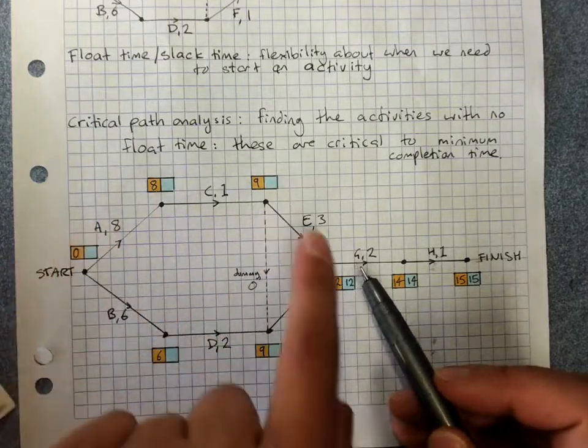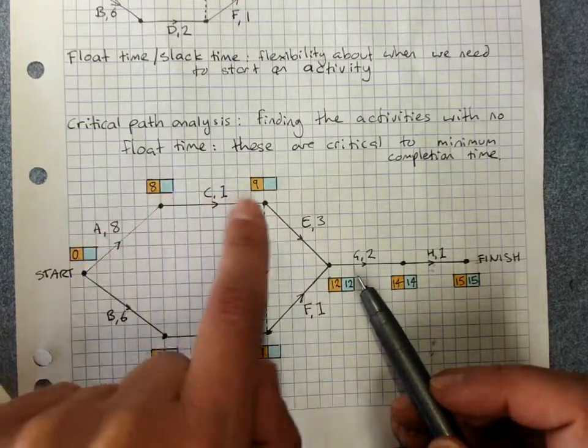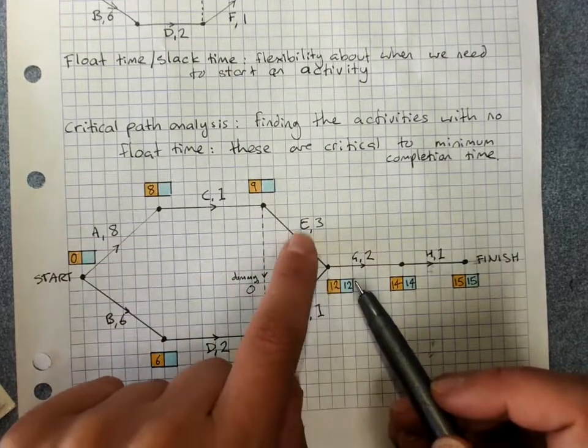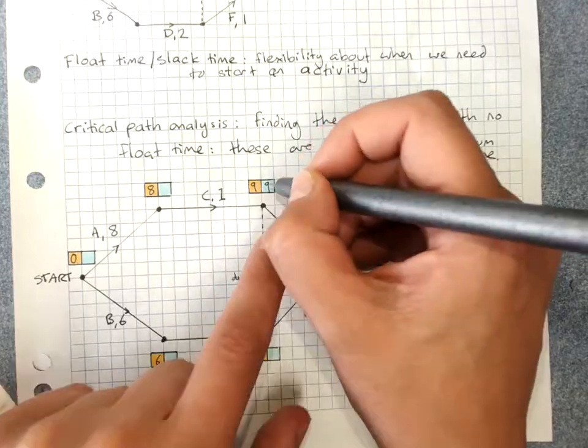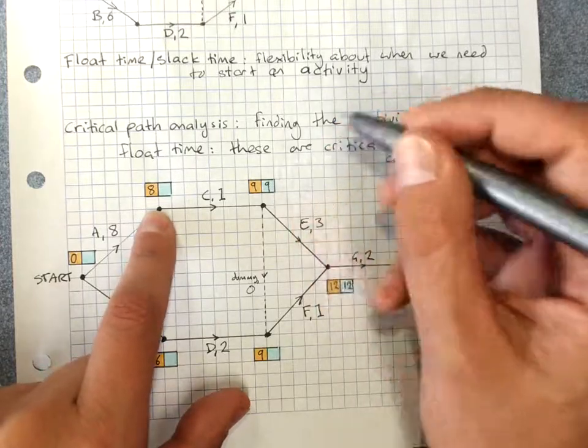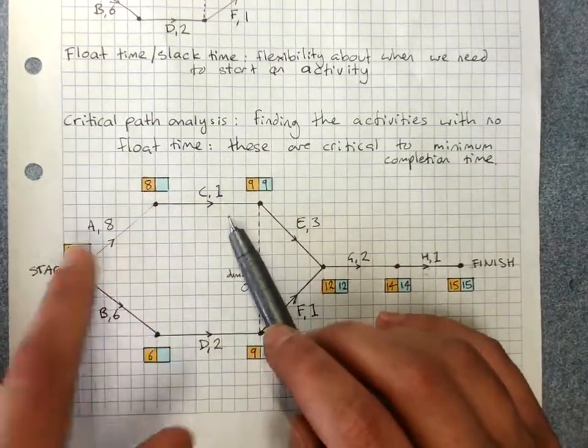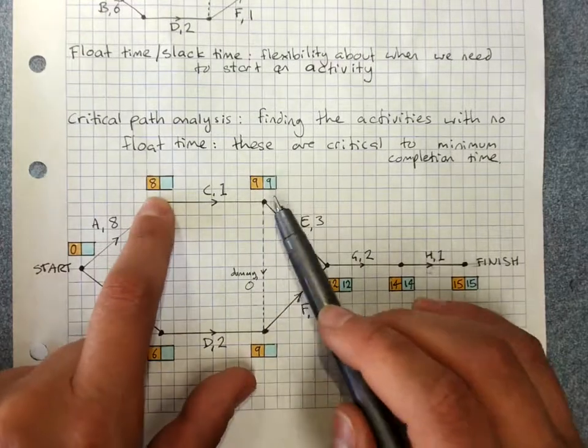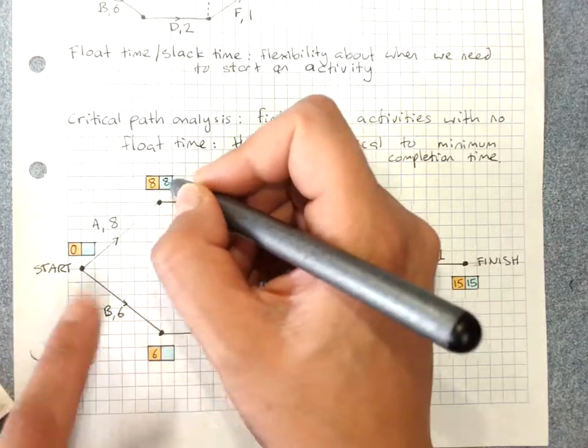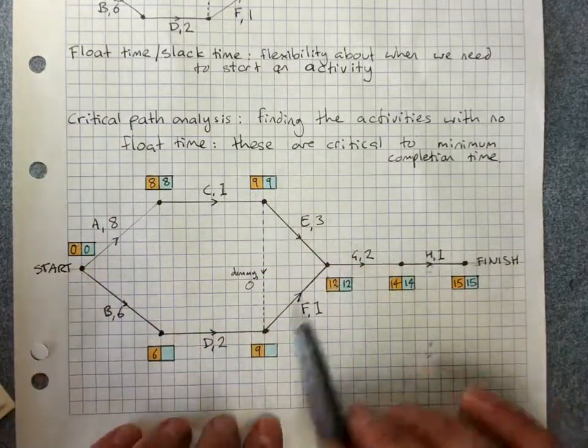Now, these ones here didn't have any slack time. You'll expect that these numbers are going to be the same in each box, because the latest I can finish E, 12 minus 3, is 9. The latest I can finish C is 9. The latest I can finish, so finish A, you see like we're getting to the end of A here, is 9 minus 1, which is 8. And this sits at 0 here. So see, these numbers end up the same. But look what happens here.